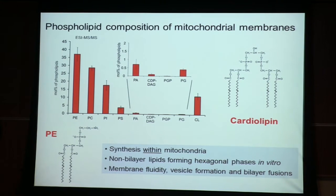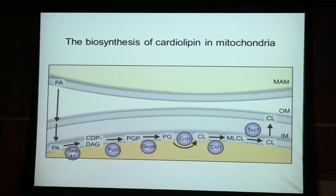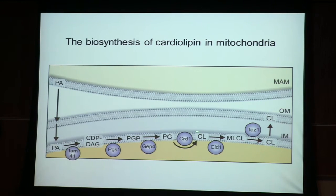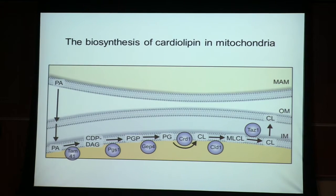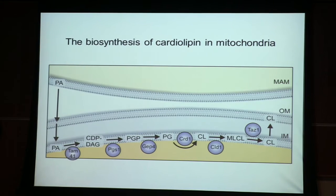Cardiolipin is synthesized within mitochondria via an enzymatic cascade that resides in the mitochondrial inner membrane. These are the names of the yeast enzymes. This results in the formation of a mature cardiolipin molecule, followed by cardiolipin remodeling. As a consequence, the cardiolipin molecules all have the same acyl chains — symmetric molecules — and this all occurs in the mitochondrial inner membrane before redistribution between the membranes occurs.